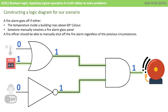In a similar situation, the temperature is below 60 so the input is zero, but someone has smashed a fire alarm point, so that input is a one. We have exactly the same situation — a one out of the OR gate and a one out of the NOT gate. That's two ones into the AND gate and the fire alarm goes off.